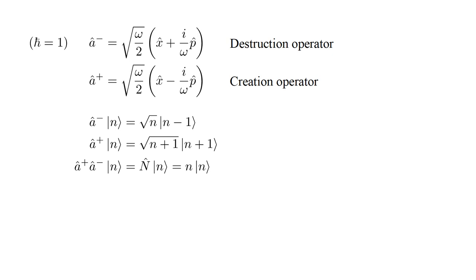The destruction operator, followed by the creation operator, forms the number operator, n-hat. n-hat applied to the state n produces n times the state n. Using the position momentum commutator, we can calculate the destruction creation commutator. The value is one.